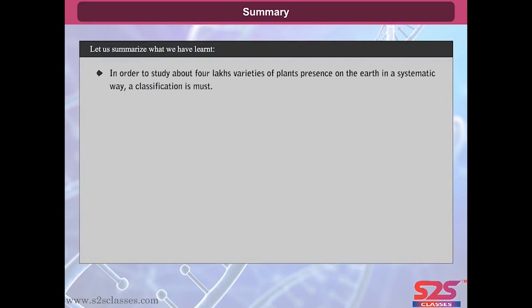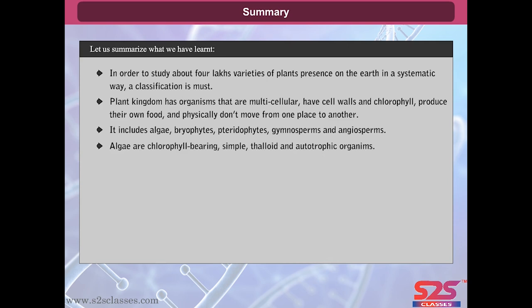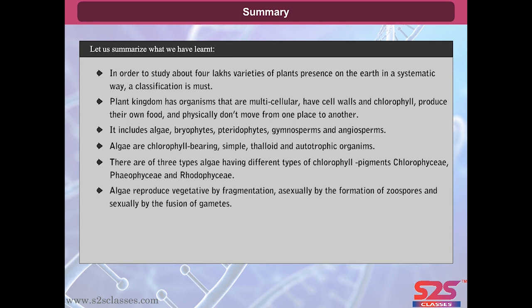In summary, to study the more than four lakh varieties of plants on earth in a systematic way, classification is essential. The plant kingdom includes algae, bryophytes, pteridophytes, gymnosperms, and angiosperms. Algae are chlorophyll-bearing, simple, thaloid, and autotrophic organisms. There are three types of algae with different chlorophyll pigments: Chlorophyceae, Phaeophyceae, and Rhodophyceae. Algae reproduce vegetatively by fragmentation, asexually by zoospores, and sexually by fusion of gametes.